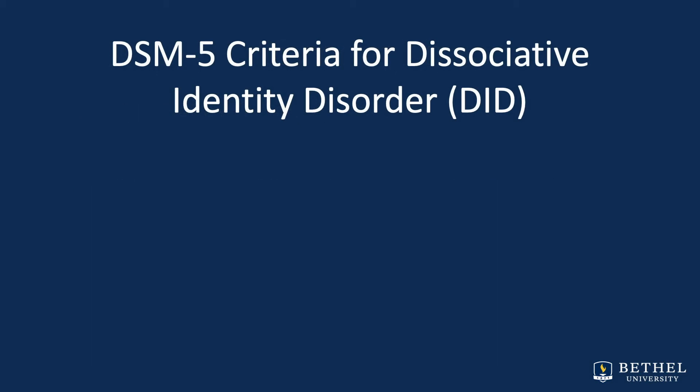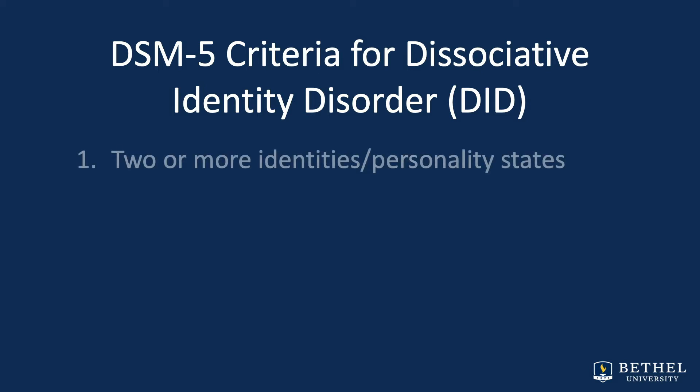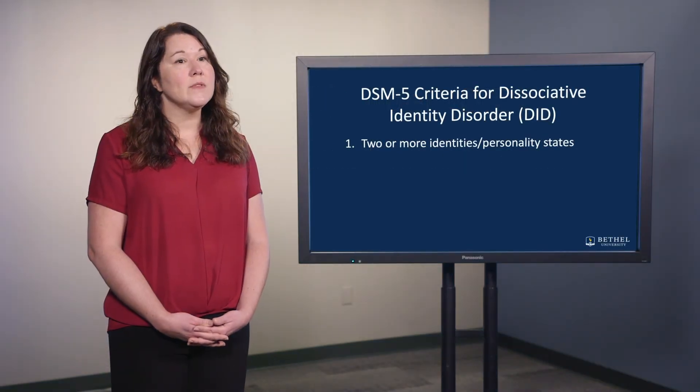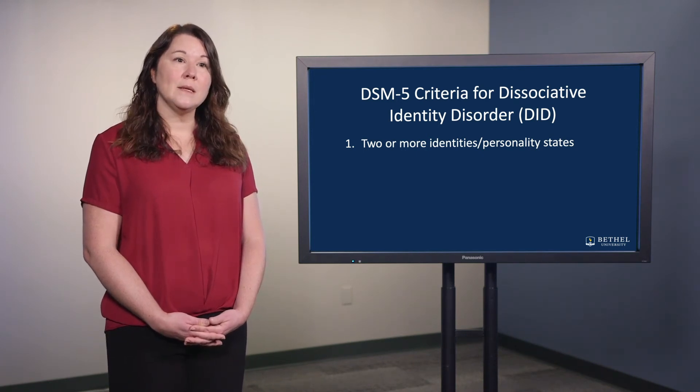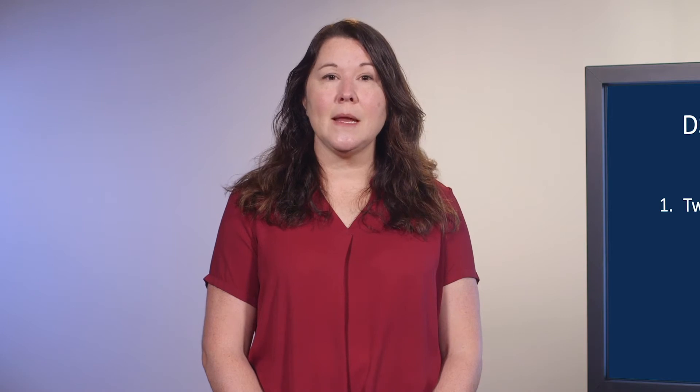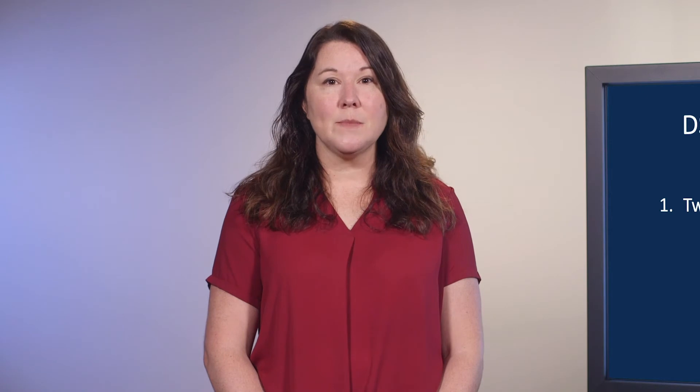The DSM-5 details related to Dissociative Identity Disorder have the following criteria. The first is that two or more distinct identities or personality states are present, each with its own relatively enduring pattern of perceiving, relating to, and thinking about the environment and self. According to the DSM-5, personality states may be seen as an experience of possession. These states involve a marked discontinuity in sense of self and sense of agency, accompanied by related alterations in affect, behavior, consciousness, memory, perception, cognition, and/or sensory motor functioning.